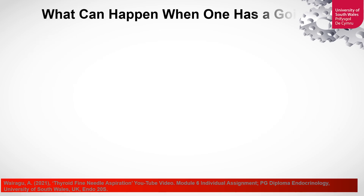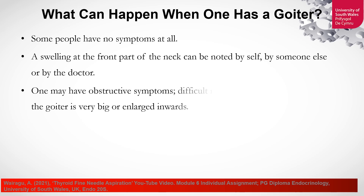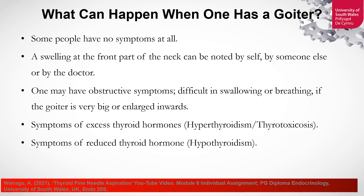What can happen when you have a goiter? Some people have no symptoms at all. There could be a swelling at the front part of the neck, which can be noted by self, by someone else, or by the doctor. One may have obstructive symptoms like difficulty in swallowing or breathing, especially if the goiter is very large. Some patients have symptoms of excess thyroid hormone production, called hyperthyroidism or thyrotoxicosis, or symptoms of reduced thyroid hormone production, which is called hypothyroidism.